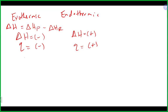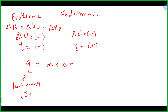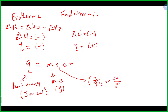We finished up talking about specific heat capacity and this equation. Q is the heat or energy, with values of joules or calories. M is mass in grams. S is the specific heat capacity, and that has three units: joules per gram per degree Celsius, or calories per gram per degree Celsius.